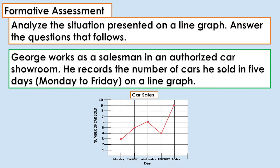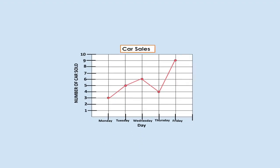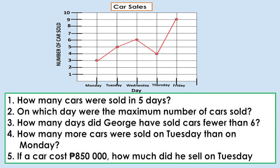Day 5. Formative Assessment. Analyze the situation presented on a line graph. Answer the question that follows. George works as a salesman in an authorized car showroom. He records the number of cars he sold in 5 days, Monday to Friday, on a line graph. Let's answer the question. Number 1: How many cars were sold in 5 days? Number 2: On which day were the maximum number of cars sold? Number 3: How many days did George have sold cars fewer than 6? Number 4: How many more cars were sold on Tuesday than on Monday? Number 5: If a car cost 850,000 pesos, how much did he sell on Tuesday?